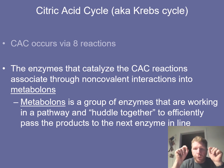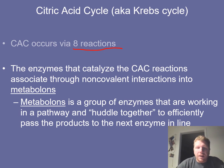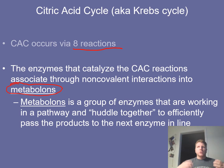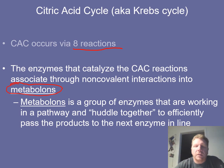Now we have produced our acetyl-CoA, so we can get into the citric acid cycle, or the TCA cycle. The citric acid cycle occurs over the course of eight reactions. The enzymes that catalyze these reactions associate through non-covalent interactions into what is known as a metabolon — groups of enzymes working in a pathway that aggregate together to efficiently pass products from one enzyme to the next.